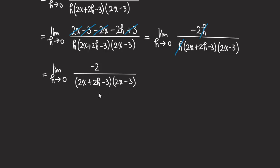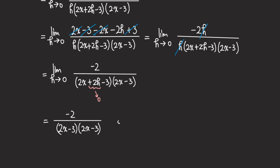Now it's good to plug in h = 0. Since h is approaching 0, the 2h is also approaching 0, so that term goes to zero. Then we can simplify to get the final answer: negative 2 in the numerator, and (2x − 3)(2x − 3) in the denominator. Or if you want, you can write the answer as negative 2 over (2x − 3) squared. Either one is good. That's it for this example.